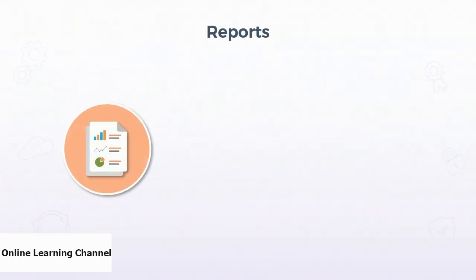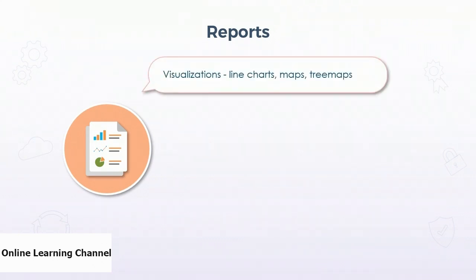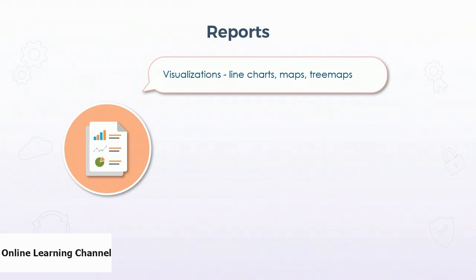Now let's dig into one of the main content types of Power BI: the report. Reports consist of one or more pages of visualizations. Visualizations simply visualize data in a specific way, and they take on many forms, such as line charts, maps, and tree maps. Tables are also a form of data visualization.